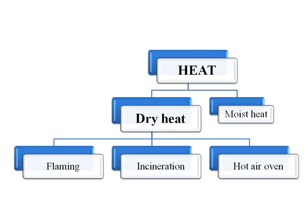We will take them one by one. Sterilization by heat is further classified into dry heat sterilization and moist heat sterilization. Examples for dry heat sterilization are flaming, incineration, and hot air oven. Among the dry heat methods, hot air oven is very important because it is the most widely used method, and you should concentrate more on it as it can be asked as an exam question.